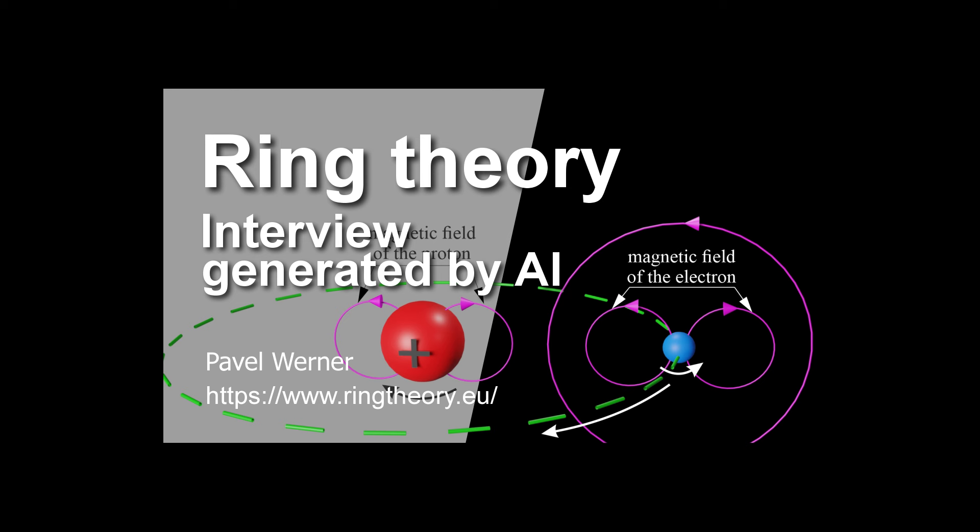Okay. That makes sense. But what about other types of bonds, like ionic bonds? That's where one atom basically steals an electron from another, right? Exactly. And RT can explain those, too. It all comes down to the relative strengths of those nuclear magnetic fields. The atom with the stronger field, again, due to the unique arrangement of its rings, will exert a greater pull on those electrons, making it more likely to snag one from a weaker neighbor. It's like a subatomic tug of war. And the nucleus with the best magnetic grip wins. Exactly. It all comes back to those rings and their remarkable properties.